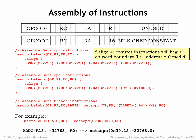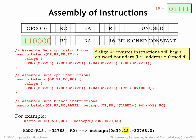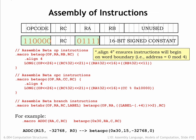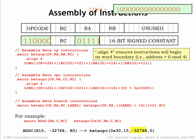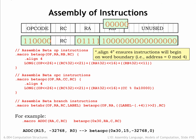The beta-opC macro does the following arithmetic. The op argument — in this case the value 0x30 — is shifted left to occupy the high-order 6 bits of the instruction. Then the RA argument, in this case 15, is placed in its proper location. The 16-bit constant, minus 32768, is positioned in the low 16 bits of the instruction. And finally, the RC argument, in this case 0, is positioned in the RC field of the instruction.